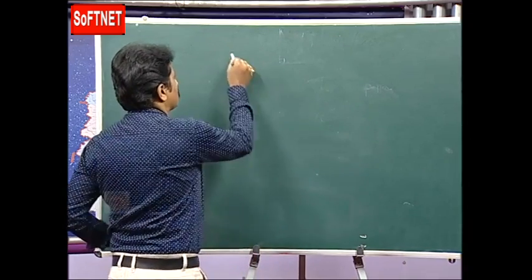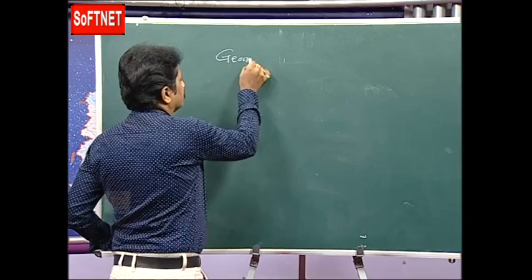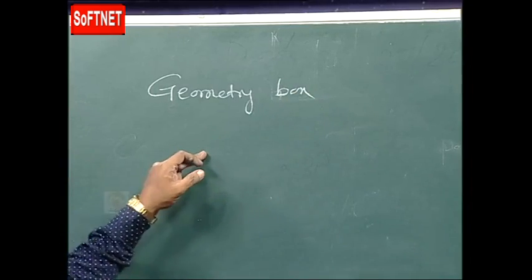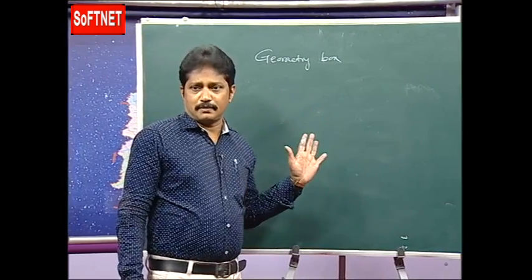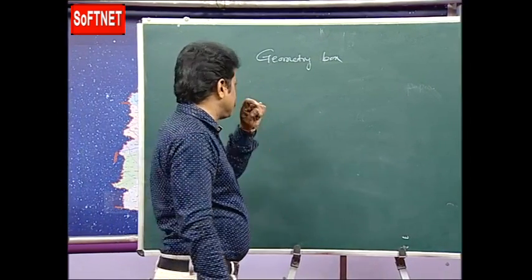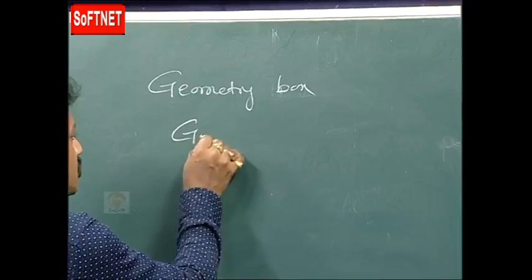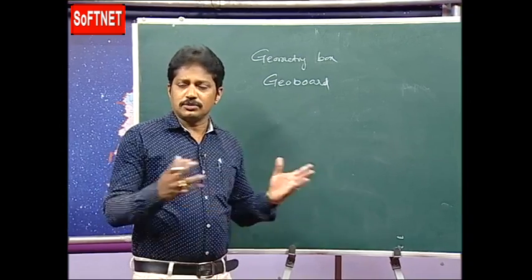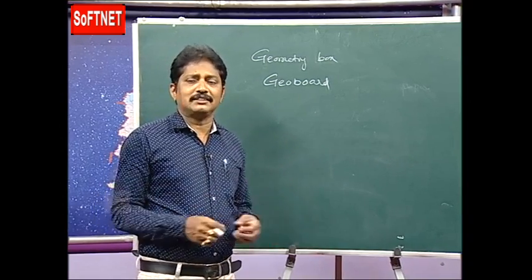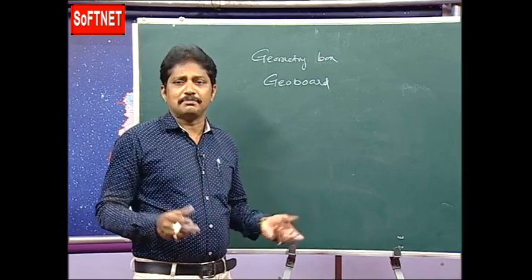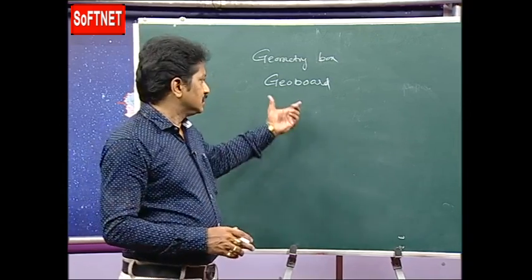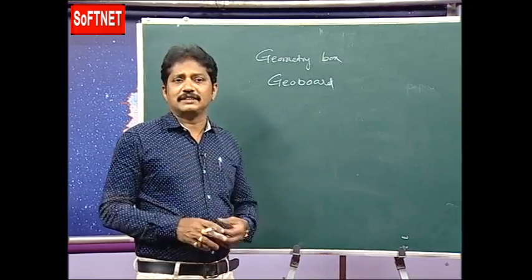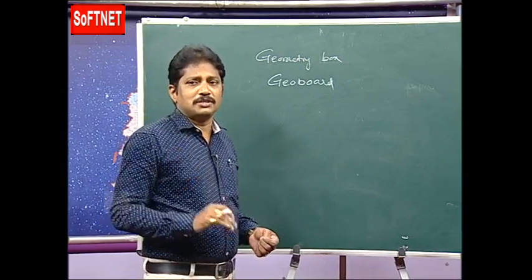To summarize the teaching aids: first is the geometry box, used mainly for constructions. Second is the geoboard — rectangular or circular — used to measure area, length, and perimeter of plane figures. These are the most important physical teaching tools.